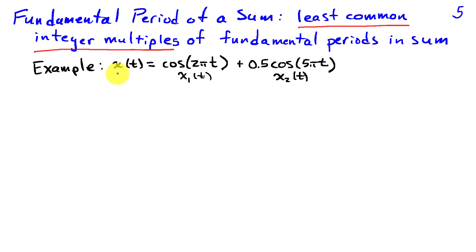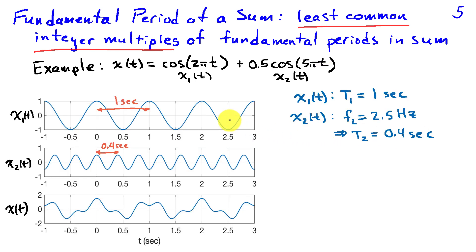So suppose I take x of t to be a sum of two signals. I'm going to call x1 cosine of 2 pi t and I'll call x2 0.5 cosine of 5 pi t. Well I've sketched out these signals x1 in the top, x2 in the middle, and x of t on the bottom.